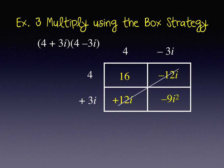So the imaginary parts cancel. We are left with 16 minus 9i squared. But i squared is negative 1. So I can simplify this product to be 25.